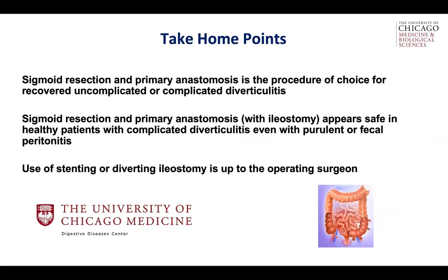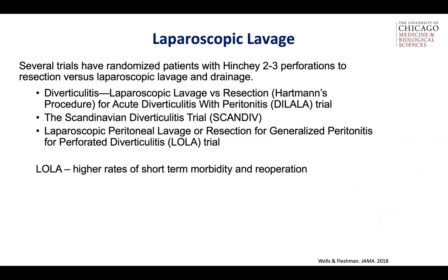Just a few take-home points. One: sigmoid resection and primary anastomosis is the procedure of choice for recovered uncomplicated or complicated diverticulitis. Two: sigmoid resection and primary anastomosis with ileostomy appears safe and in healthy patients with complicated diverticulitis, even with purulent or fecal peritonitis. Three: use of stenting or diverting ileostomy is up to the operating surgeon. I want to thank SAGES very much for the honor, and I'm happy to answer any questions during the panel. Thank you.